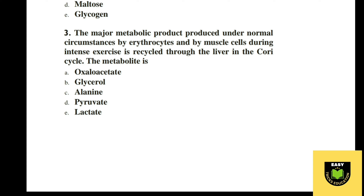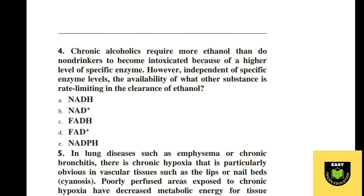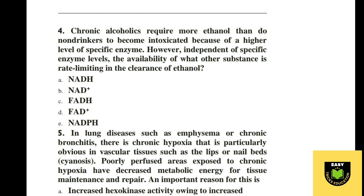Question 3. The major metabolic product under normal circumstances by erythrocytes and by muscle cells during intense exercise is recycled through the liver in the Cori cycle. The metabolite is: A oxaloacetate, B glycerol, C LDL, D pyruvate, E lactate. The correct option is E, lactate.